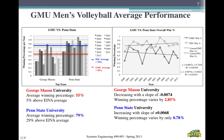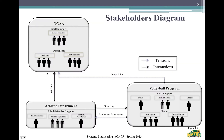Comparing Penn State to our George Mason men's program, the variability graph is shown on the right. Our main stakeholders are the NCAA Athletic Department and volleyball programs, broken down into further sub-stakeholders.